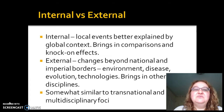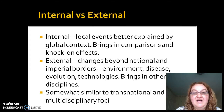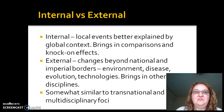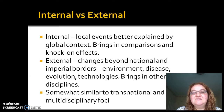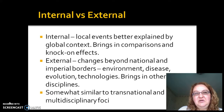Manning talks about internal and external foci. In terms of internal, he's looking at local events that can be better explained by a global context. One of his examples is the rise of empires in different places around the world — the Habsburgs and in China — and why these empires seem to arise in different places can be better explained in the global context by an influx of silver from South America. Without understanding that global context, you wouldn't completely understand what was going on within the Habsburg empire.